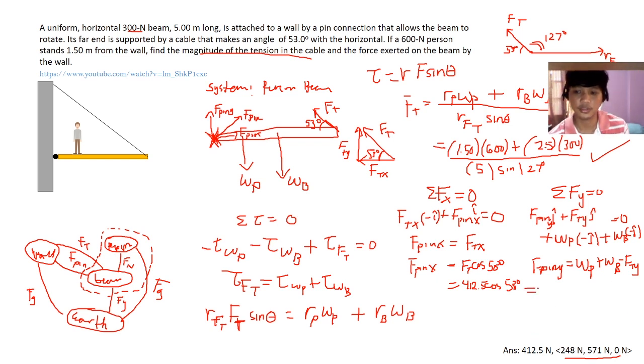And w p is the weight of the person, 600 plus 300 is the weight of the beam, minus f t y is f t sine 53. So f t is 412.5. 600 plus 300 is 900 minus 412.5 times sine 53. I got the correct answer. So that's it. Thank you.